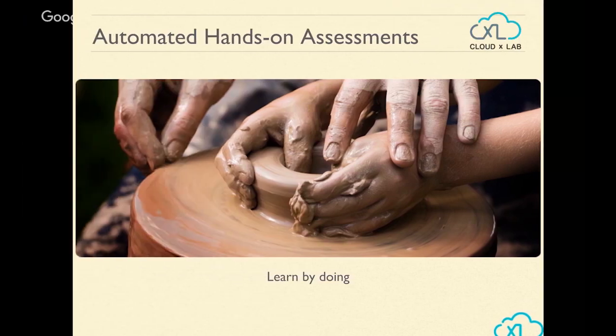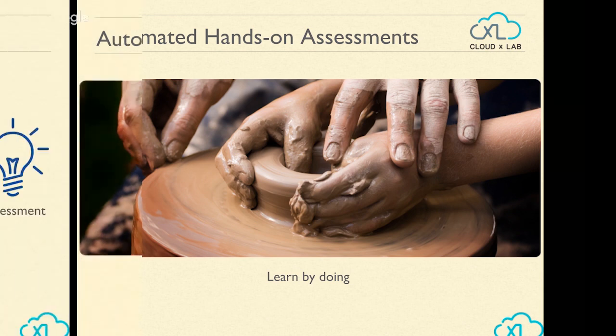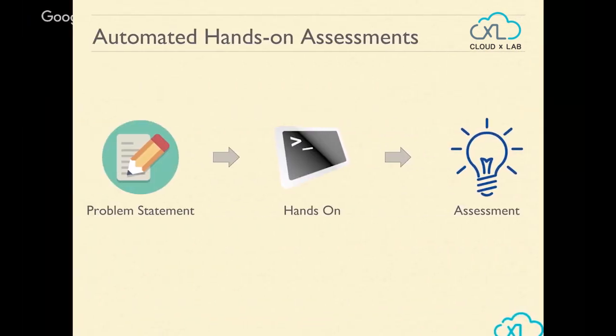The core idea behind automated hands-on assessment is learning by doing. We can only learn by doing things; otherwise we won't retain knowledge — we'll only remember words and theory. There is a problem statement provided, you perform the hands-on, and then automatic assessment happens. Traditionally an instructor would evaluate you, but we've made it automated, drastically improving overall response time.